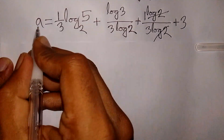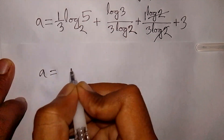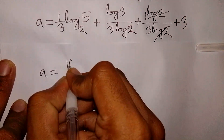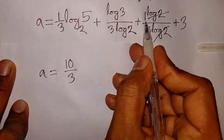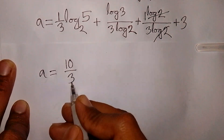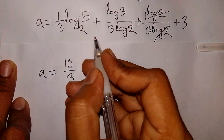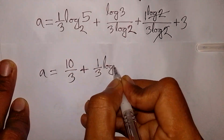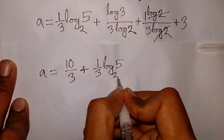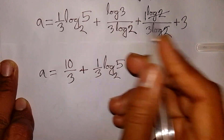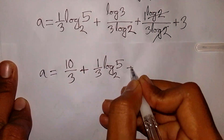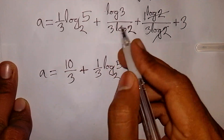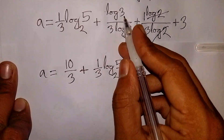Now a will be equal to 1/3 plus 3, which is 10/3, then plus (1/3)·log₂5, then plus (1/3)·log₂3. So this is the value of a — this is our final answer.